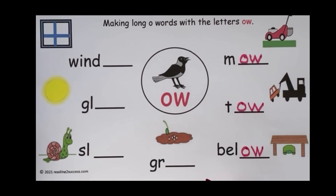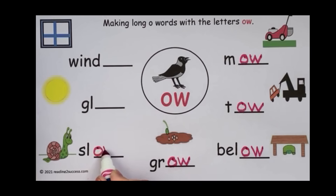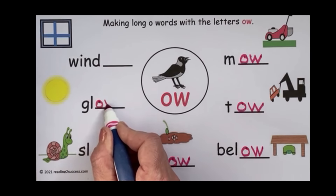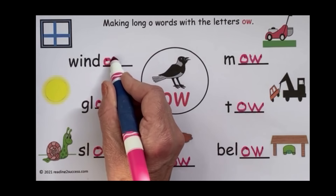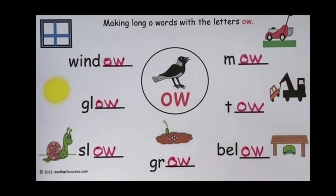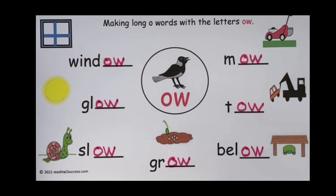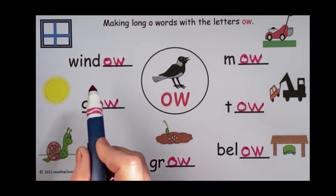There are some seeds there, and now something is starting to grow. We have a cute little snail — he is very, very slow. This is bright, and it can glow. And this is something we look outside through: a window. So all of our long O words made with the letters O-W are: mow, tow, below, grow, slow, glow, and window.